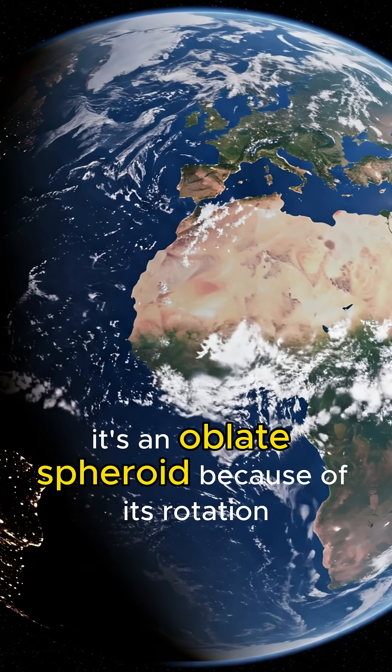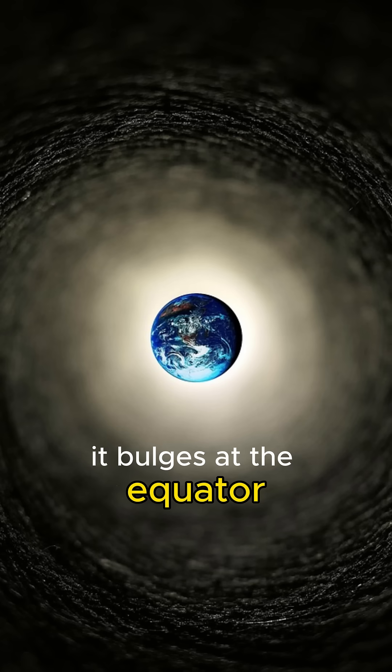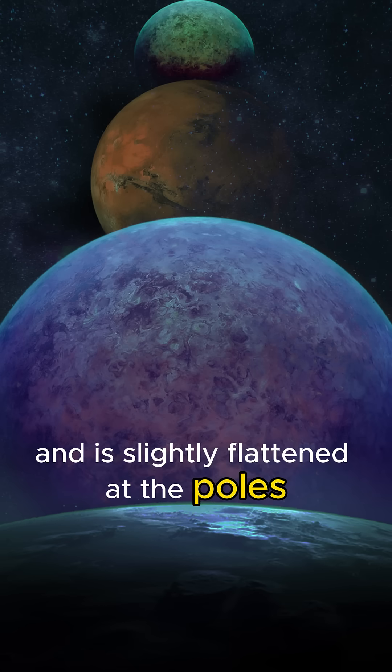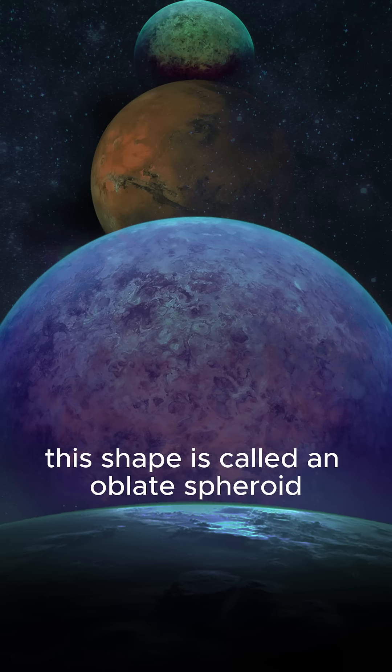Earth is not a perfect sphere. It's an oblate spheroid. Because of its rotation, Earth bulges at the equator and is slightly flattened at the poles. This shape is called an oblate spheroid.